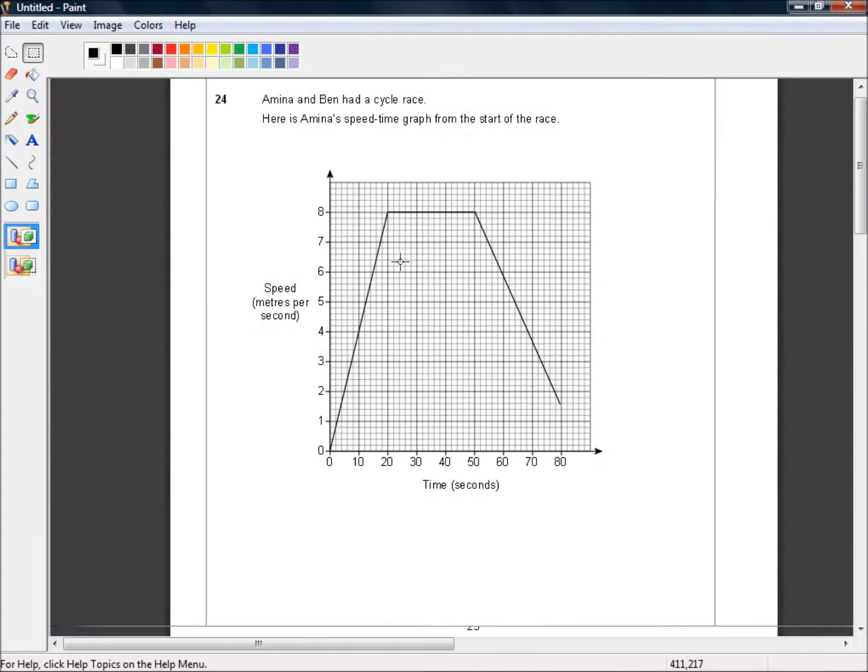Hello and welcome to the AQA GCSE 8300 series. This is the third paper in the higher tier and we're picking up in question 24. This is a calculator paper by the way. Amina and Ben had a cycle race. Here is Amina's speed time graph from the start of the race.